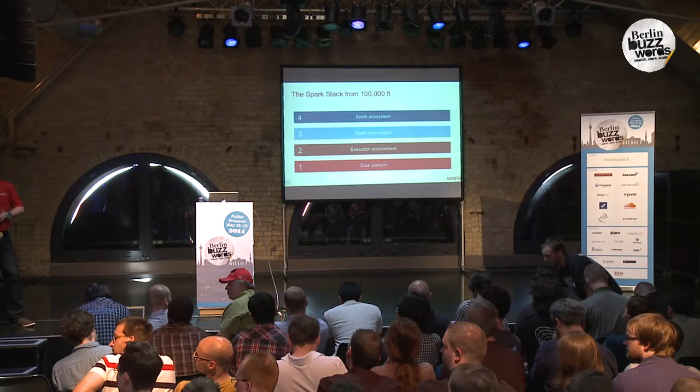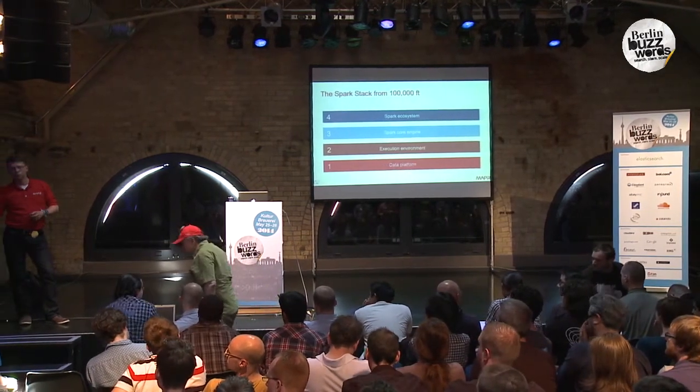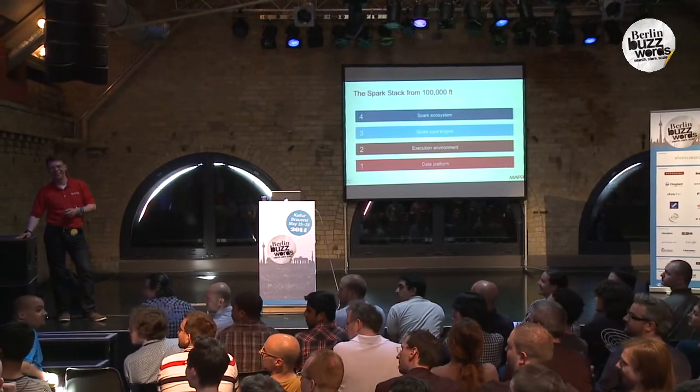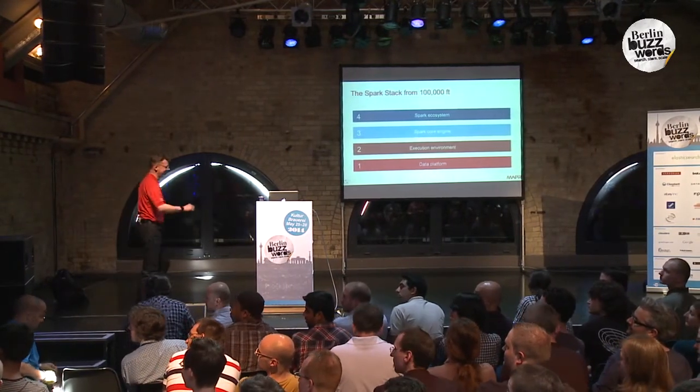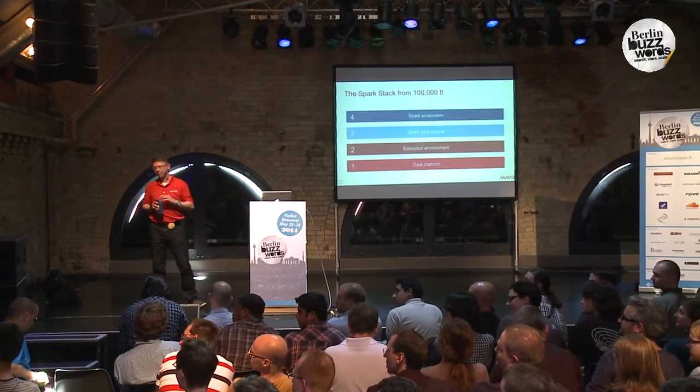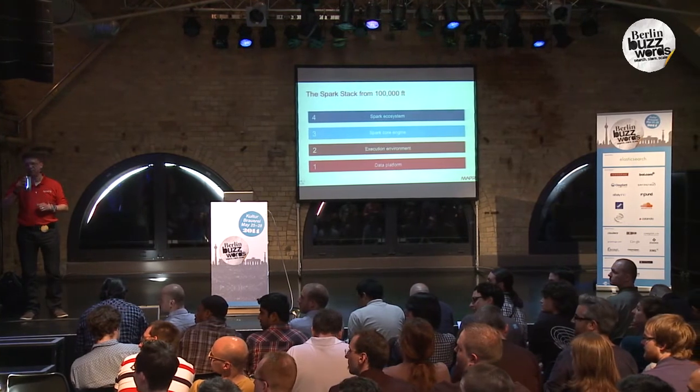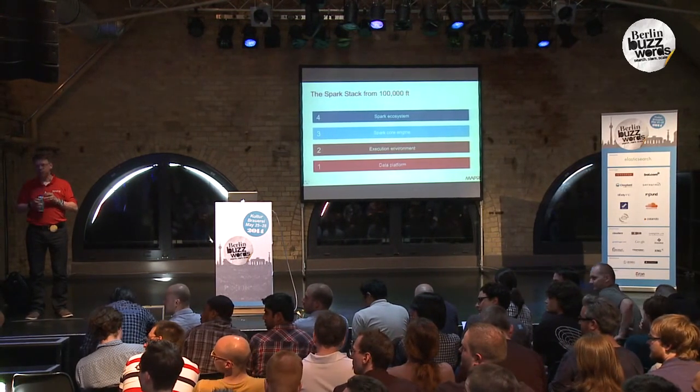Q: Are there any alternatives to HDFS for storage? A: There are commercial hardware alternatives — EMC, NetApp — both provide reasonable storage appliances. And MapR has a high-performance HDFS clone that provides HA, a much easier operational setting than stock Hadoop, and gives you read-write access. We'll talk more about it offline if you want.